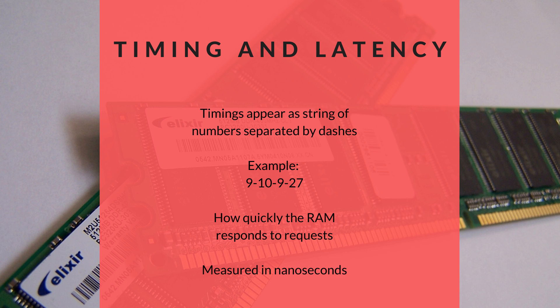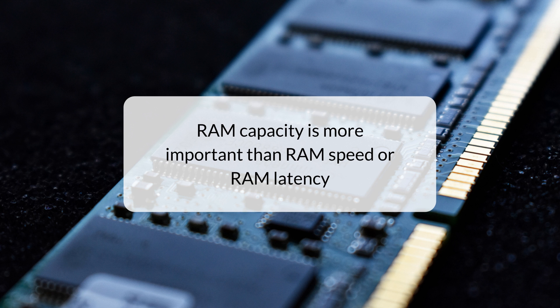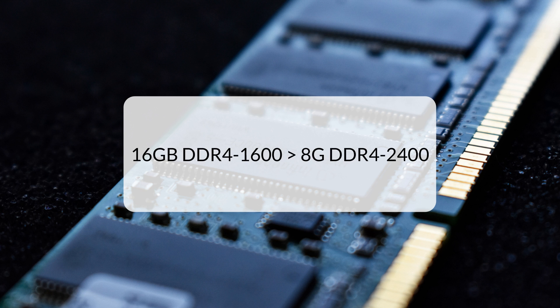But how much should you worry about clock speed and latency? For most people, capacity trumps clock speed and latency every time. You'll get more benefit from 16 gigs of DDR4-1600 RAM than from 8 gigabytes of DDR4-2400 RAM. In most cases, timing and latency are the last points of consideration.